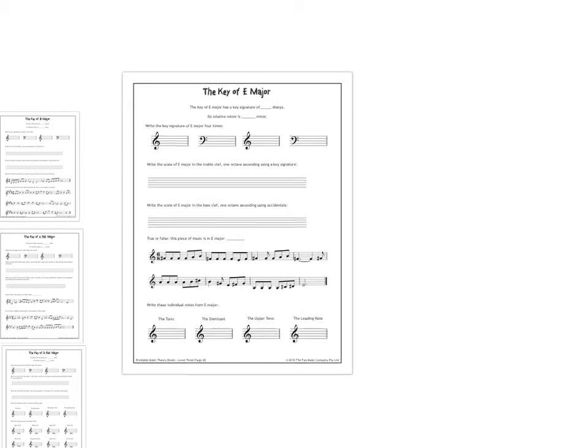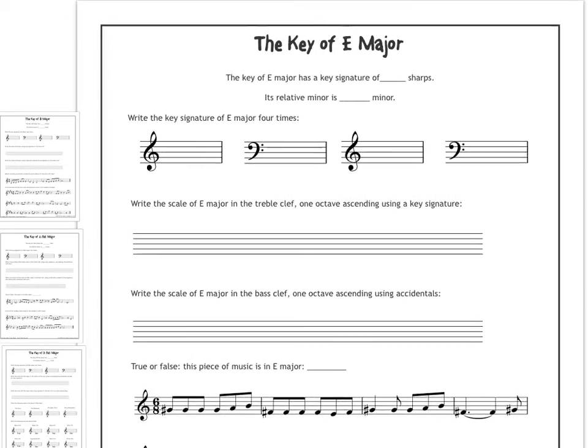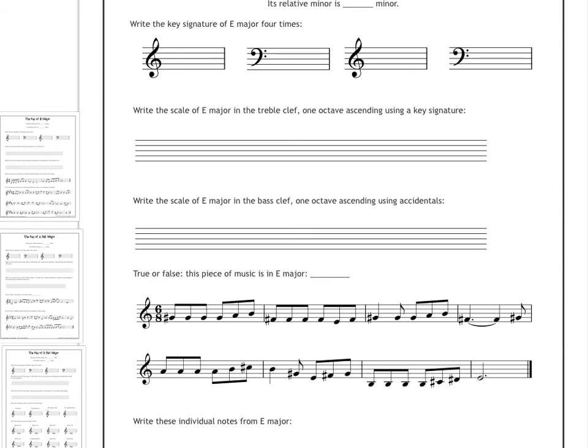They are all essentially the same worksheet, but working in different key signatures. So the first one, for example, we're on page 36 in your book. Key of E major, you can easily tell me what the key signature is, because you have your circle of fifths, right? The key signature of E major has a key signature of how many sharps? And its relative minor key is something minor. You should be able to figure that out, too, because you have your answer key. You have that circle of fifths from the previous page to answer this. Write the key signature of E major four times, treble clef, bass clef, treble clef, bass clef.